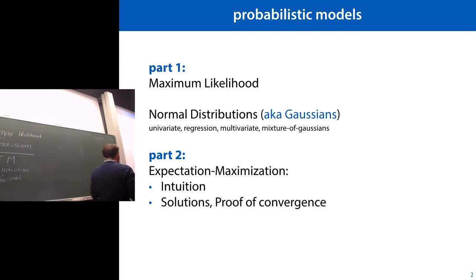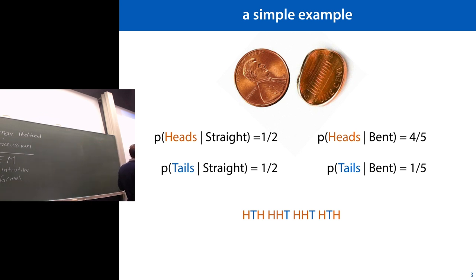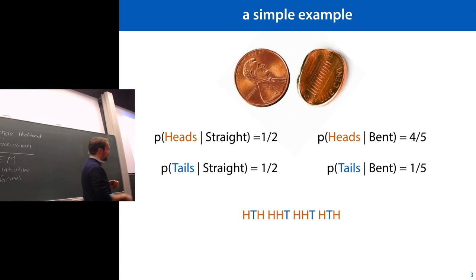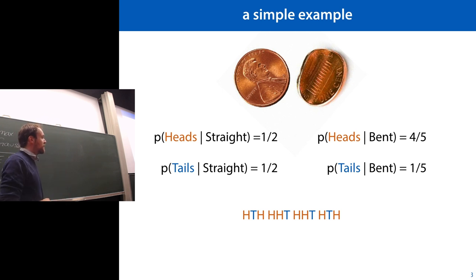Let's start with a simple example. You have two coins: one is bent and one is straight. The straight coin lands heads 50% of the time, tails 50%. The bent coin lands heads about four in five times and tails about one in five. We ask a friend to pick a random coin without showing us and flip it 12 times. There are more heads in this sequence than tails, so which coin did he use — the bent coin or the straight coin?